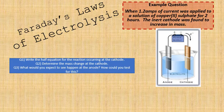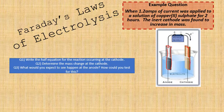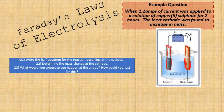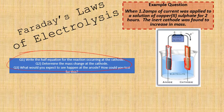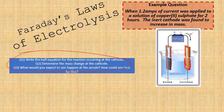Here's our example question: when 1.2 amps of current was applied to a solution of copper-2-sulfate for two hours, the inert cathode was found to increase in mass. The electrodes here are inert, so they're not going to react. The questions are: write the half equation for the reaction occurring at the cathode; determine the mass change at the cathode; and what would you expect to see happen at the anode, and how would you test for this?